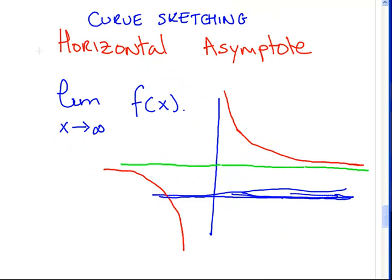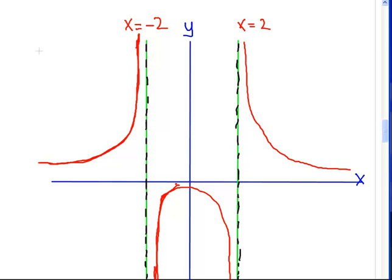I am just going to flick back here to an earlier example. This is that graph. That is the f(x) equals x squared plus 4 over x squared minus 4. That's what we are looking at here.